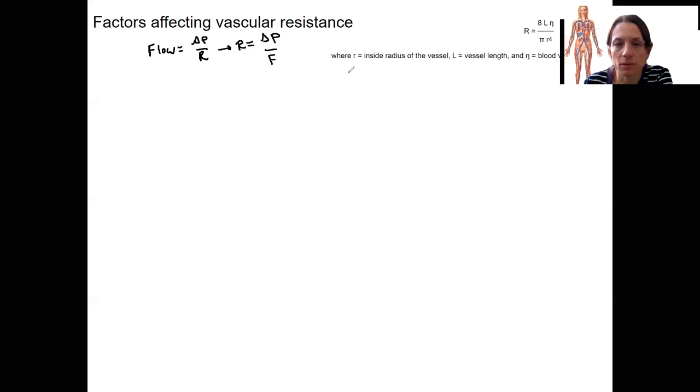So those are the three things. I'm going to go through them, and we'll go through the top ones first, the numerator. So these are going to be things that increase blood resistance because they're on the numerator. So as these get bigger, resistance gets bigger.